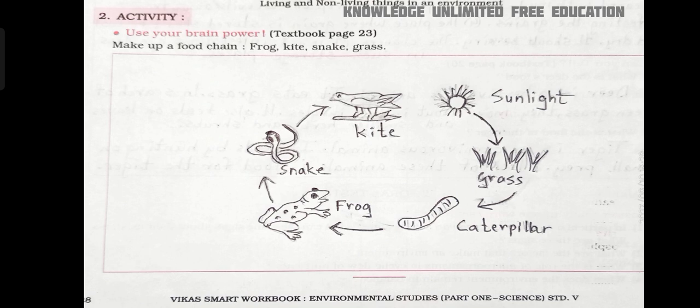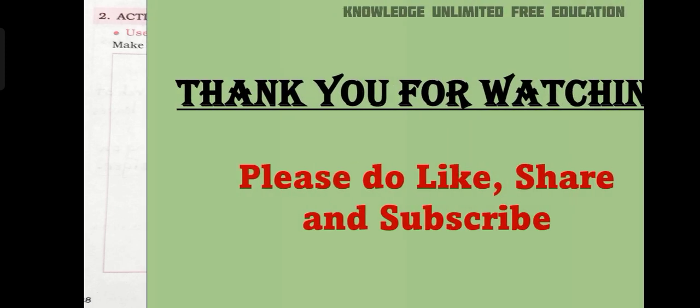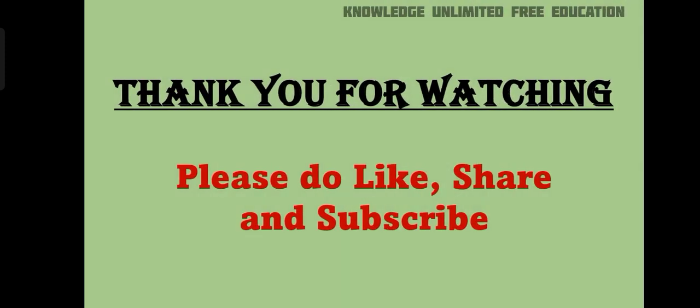Activity — Use your brain power: Make up a food chain using frog, kite, snake, and grass. Children, you can see this food chain and draw it in your workbook. That's all for lesson number 4, Environmental Balance.